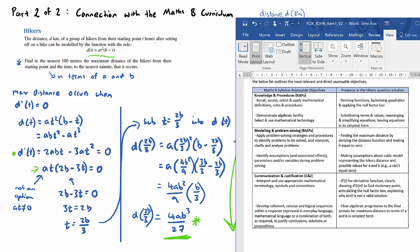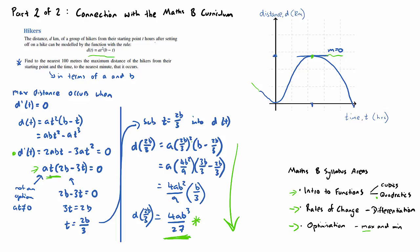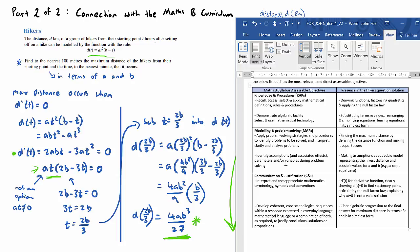For the modelling and problem-solving section, the key point here is the knowledge that in order to find the maximum distance away from the starting point, we're going to have to derive the distance function. And that will allow us to find the local maximum or the turning point of our cubic function. And then also, I've also selected identifying assumptions because when we got our factorized quadratic here on the left, the knowledge to eliminate or not choose t as one of our solutions because a can't equal zero. Because if a was zero, this whole distance function would be zero. So just the basic understanding to make an assumption about the values of a.